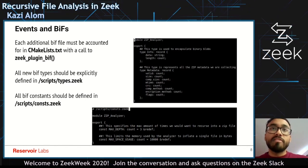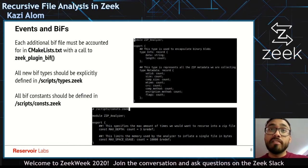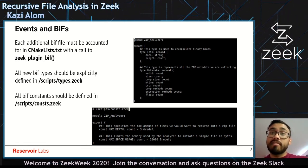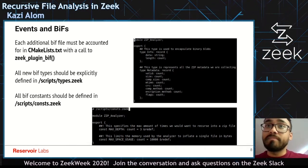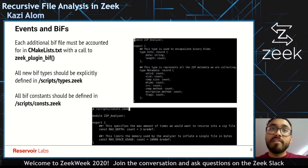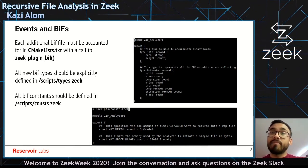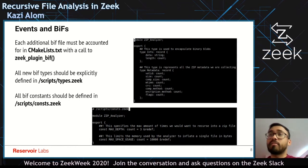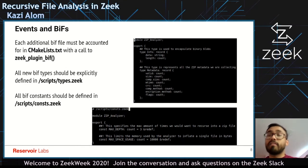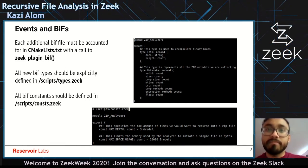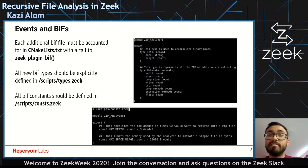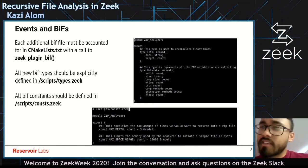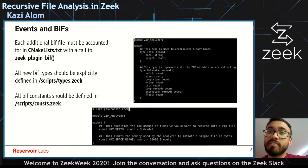Each additional built-in function file has to be accounted for in CMakeLists using a call to Zeek plugin Bif. All new Bif types should be explicitly defined in scripts/types.zeek. Those records I mentioned — the metadata record has some zip metadata we care about when storing logs, and the info record stores decompressed bytes of a file. In the other image, we can see the default values for the constants: a max depth of three and a max space usage of 10,000 bytes. These can be tuned from a Zeek script because they're redefinable.